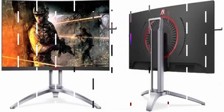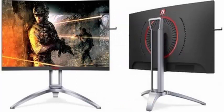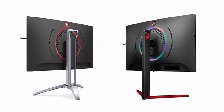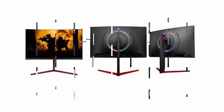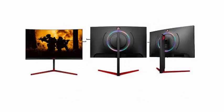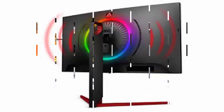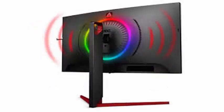The AOC AG273QCG makes use of a curved TN panel 1800R with a diagonal of 27 inches, offering a QHD resolution of 2560x1440 pixels. The specs include a response time of 1 ms, a maximum brightness of 400 candelas per m², a refresh rate of 165 Hz, and support for NVIDIA G-Sync image enhancement technology.